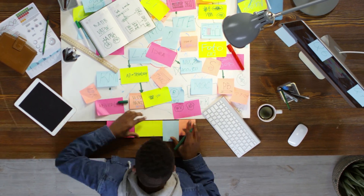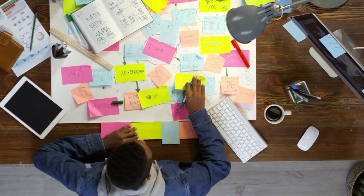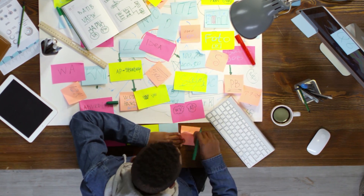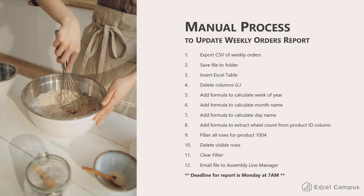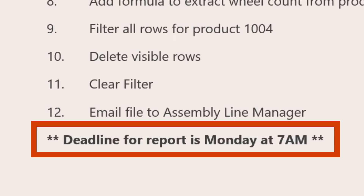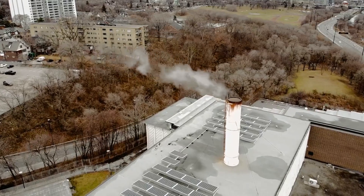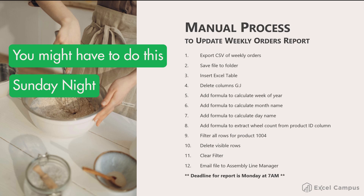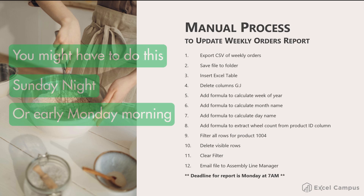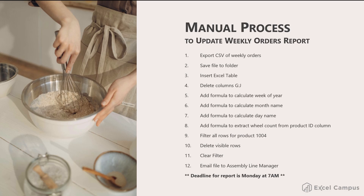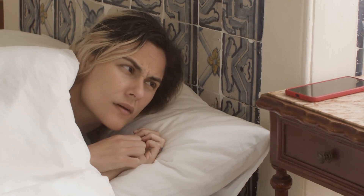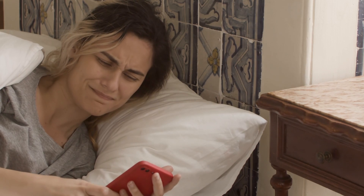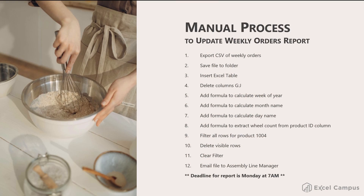If you had to write all these steps out to give to someone to do every week — especially if you went on vacation and needed someone else to do it — this is what the instruction manual might look like. The step at the bottom is the most important one: the deadline for this report is Monday at 7 a.m., because that's when the assembly line starts and manufacturing begins. That means you might have to do this task on Sunday night or very early Monday morning to capture orders that came in over the weekend, possibly outside of work hours. This is very common, especially in data type roles.